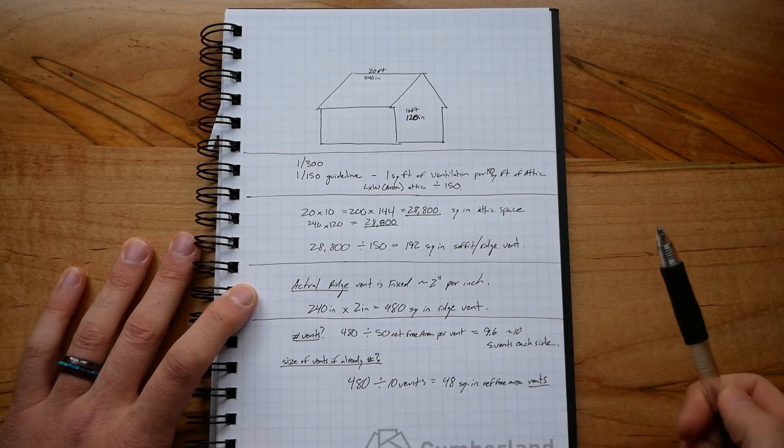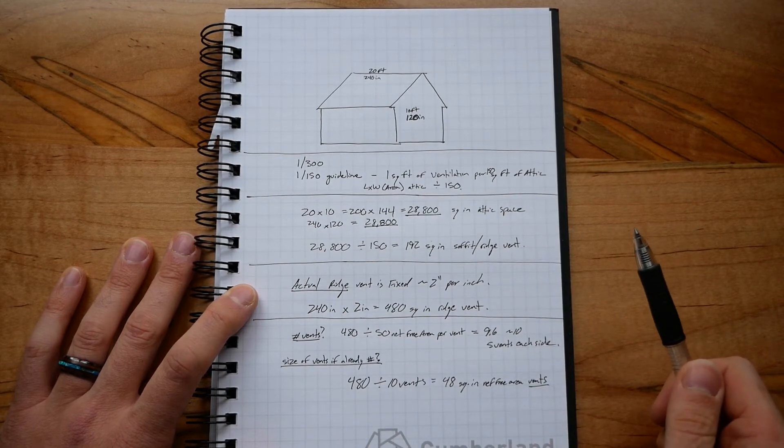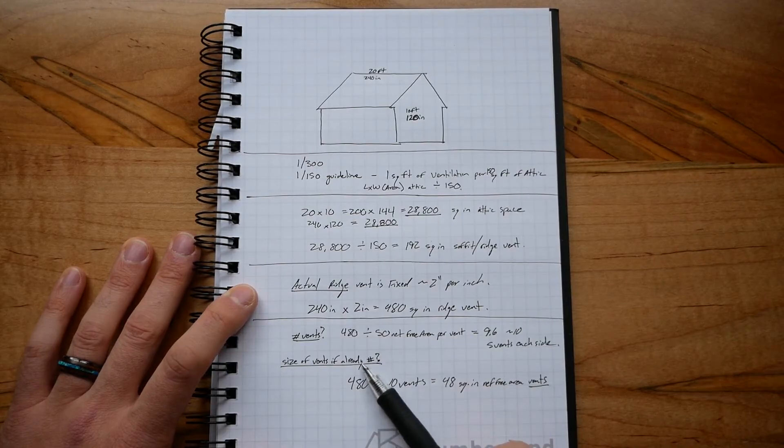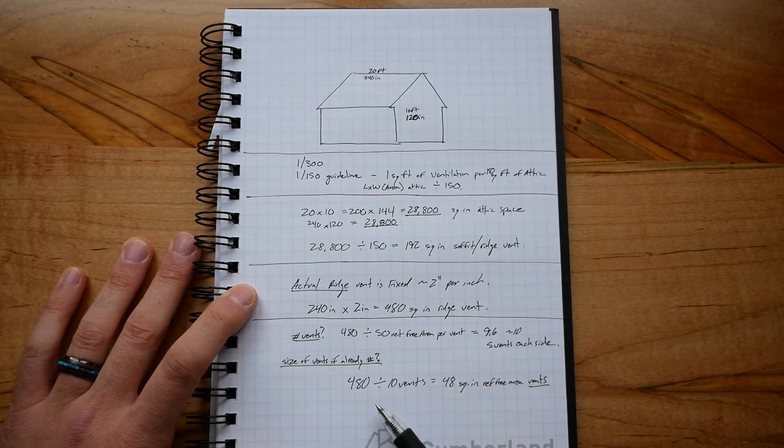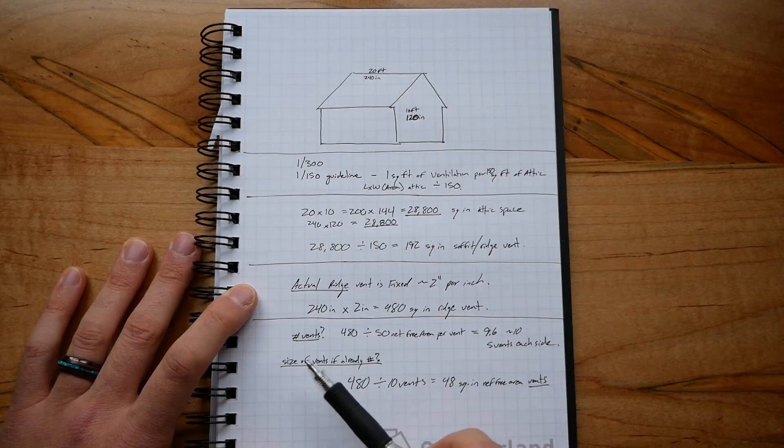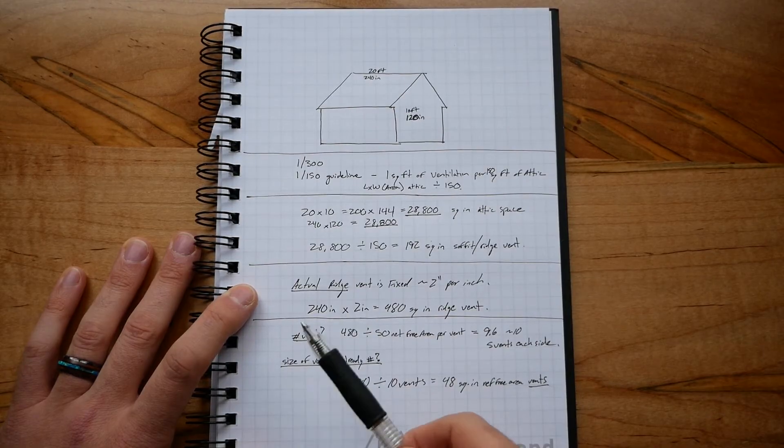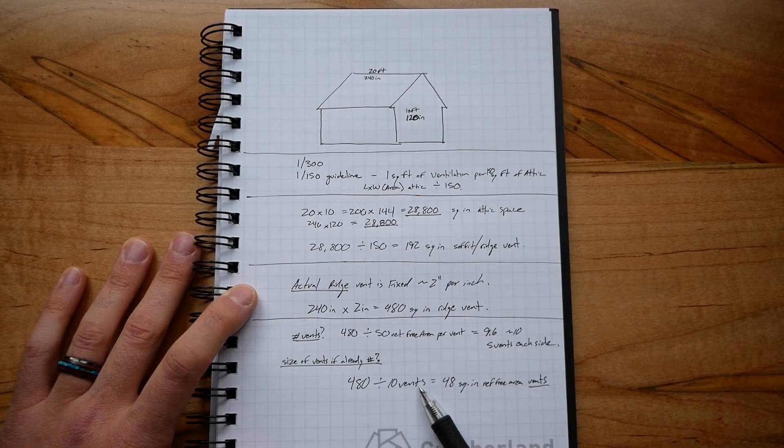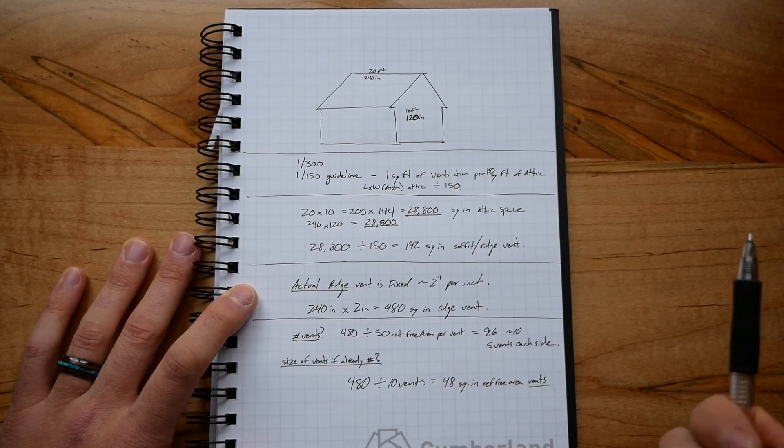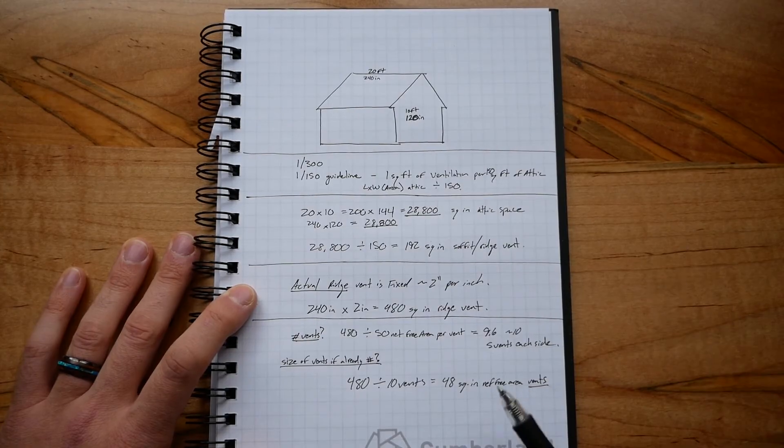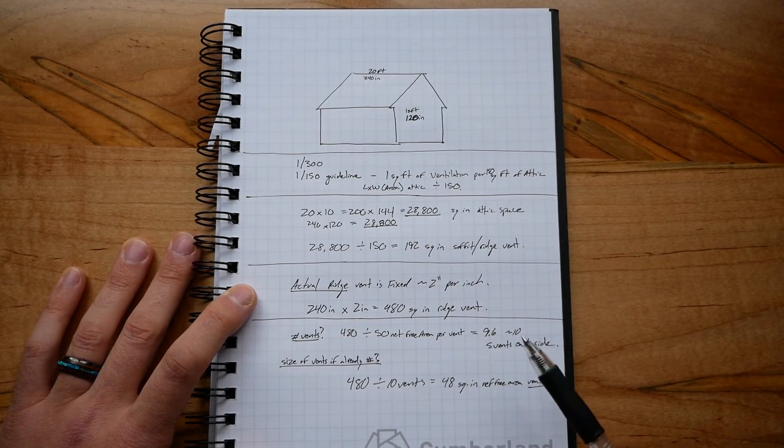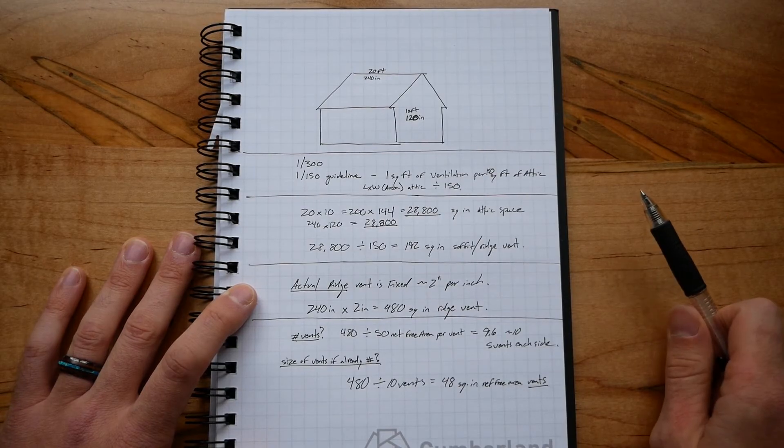Let's say you already have a house, you're not adding new vents, and you know that you already have 10 vents. So what would we do to discover what size they should be? Well, we take that 480, we divide it by 10 vent spaces that we have, and it would tell us we need each vent to be 48 square inches of net free area, and that would be right around equivalent to the ones that I just showed you - the 50 square inches - so we could use those.